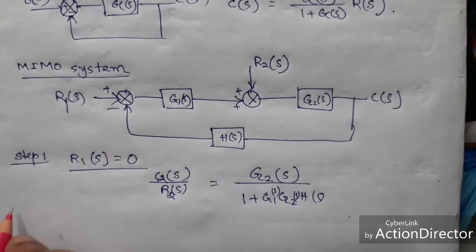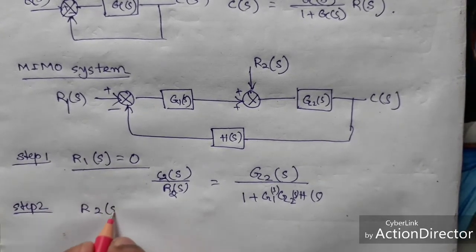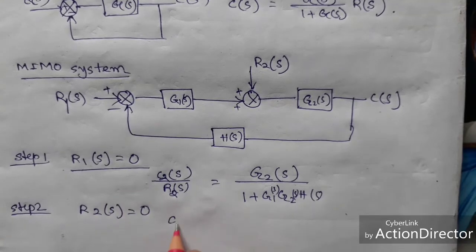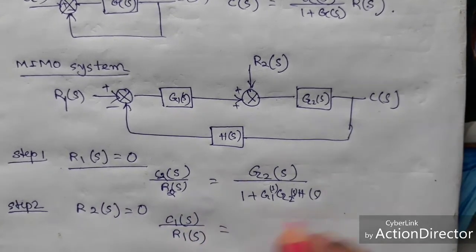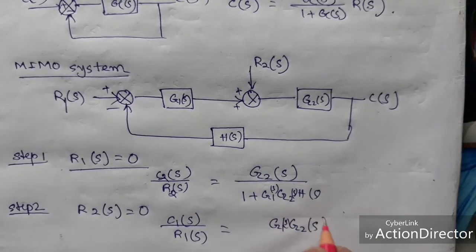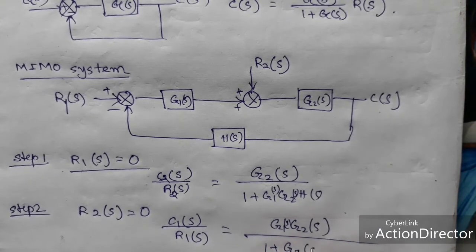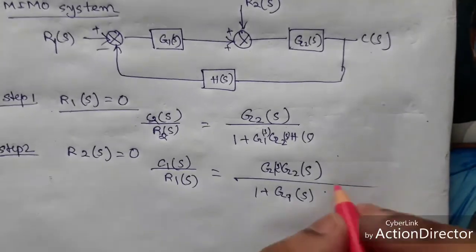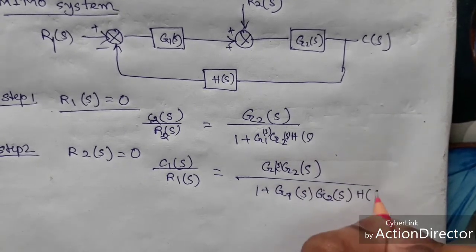Now in case of step 2, then another input equal to 0, then C1(S) by R1(S) will be G1(S) G2(S) divided by 1 plus G1(S) G2(S) into R(S).